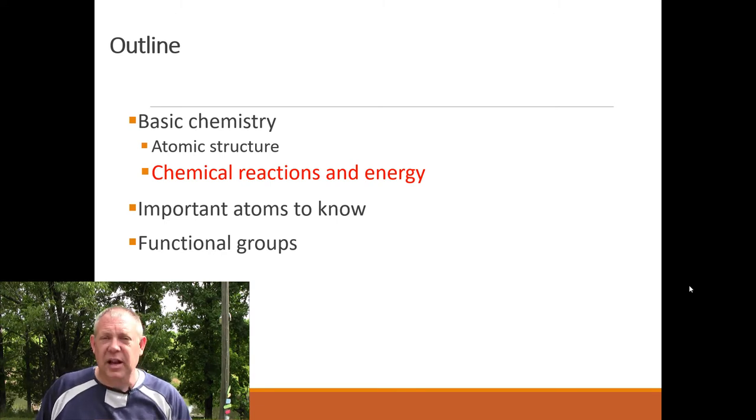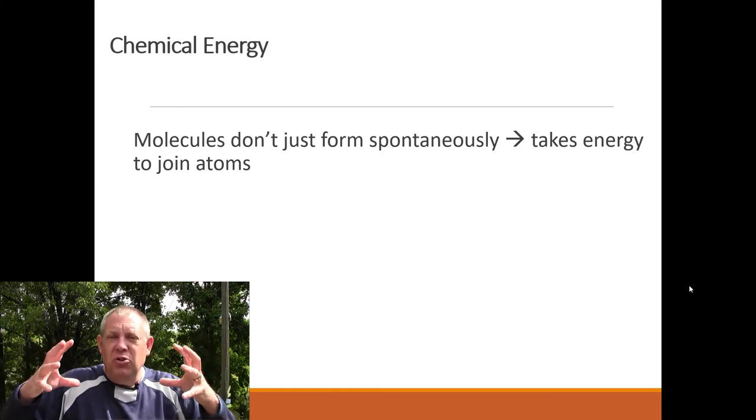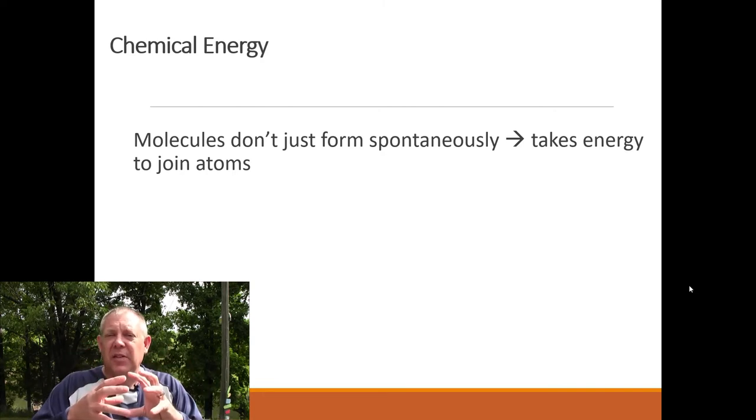Let's talk briefly about chemical reactions and energy. When atoms come together, that doesn't happen spontaneously — it takes energy to join atoms. You've got to take atoms and bring them into close proximity. They want to repel each other; the negative charges in their electron clouds push each other away. So you have to push them together, and when they get close enough, the shared electron starts to orbit both nuclei, putting them at a lower energy state because it fills out that outer shell.